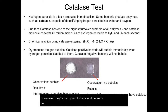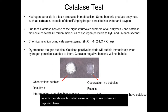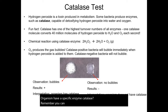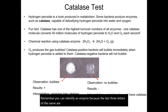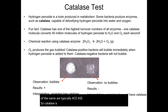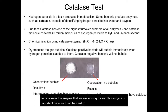With the catalase test, what we're looking to see is whether an organism has a specific enzyme — catalase. Remember, you can identify an enzyme because the last three letters of the name are typically -ase. Catalase is the enzyme we are looking for, and this enzyme is important because it can be used to break down hydrogen peroxide.